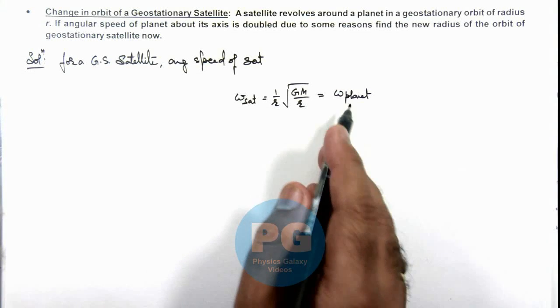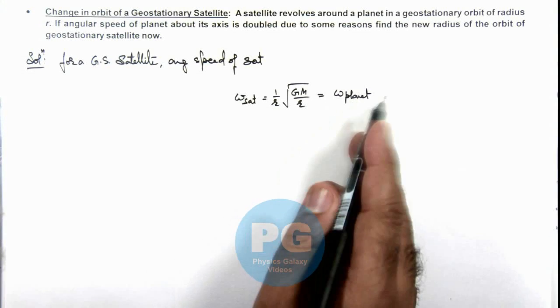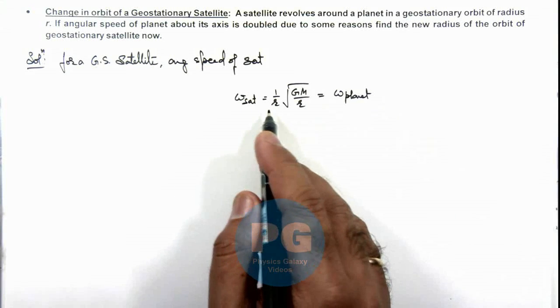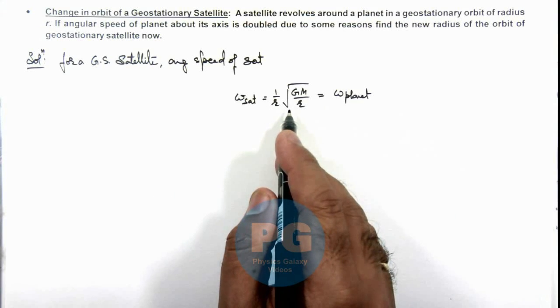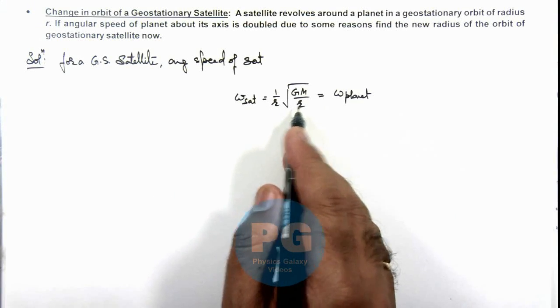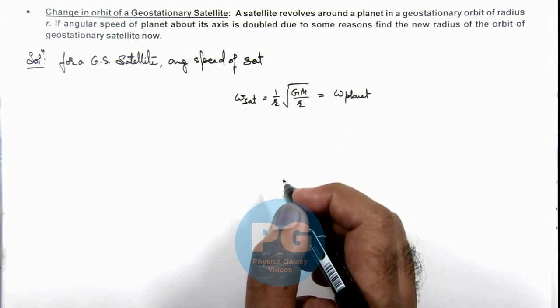Now it is given that the angular speed of planet is changed, so obviously the radius of geostationary satellite orbit must also be changed to keep it the same as the angular speed of the planet.